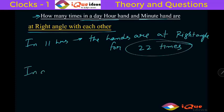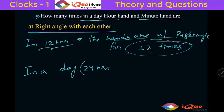So that means in a day which is of 24 hours, in 12 hours the hands are at right angle for 22 times. 12 hours duration, 22 times.